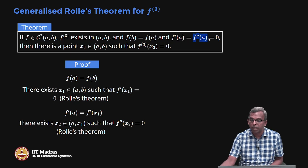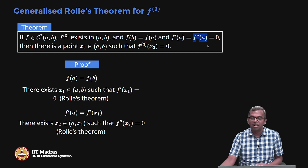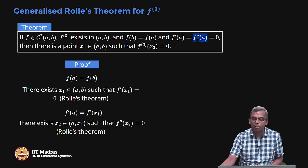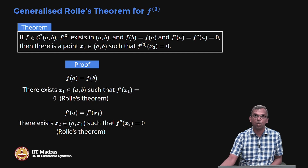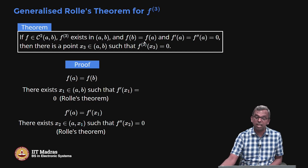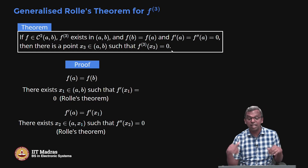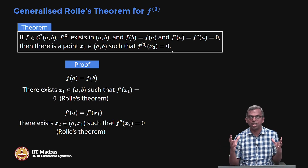This new condition is that F double prime of A is also 0. In the Rolle's theorem for F double prime, we already had F prime of A equals 0; now I am also saying F double prime of A is 0. If these conditions are satisfied, then there is a point X3 in (A,B) such that F3 of X3 equals 0.